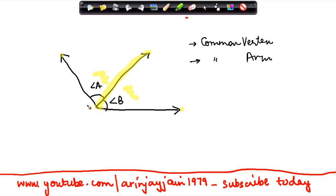And the third property is the non-common arm. It is basically this one for angle A and this one for angle B. So the non-common arms which I have highlighted are on either side of the common arm.